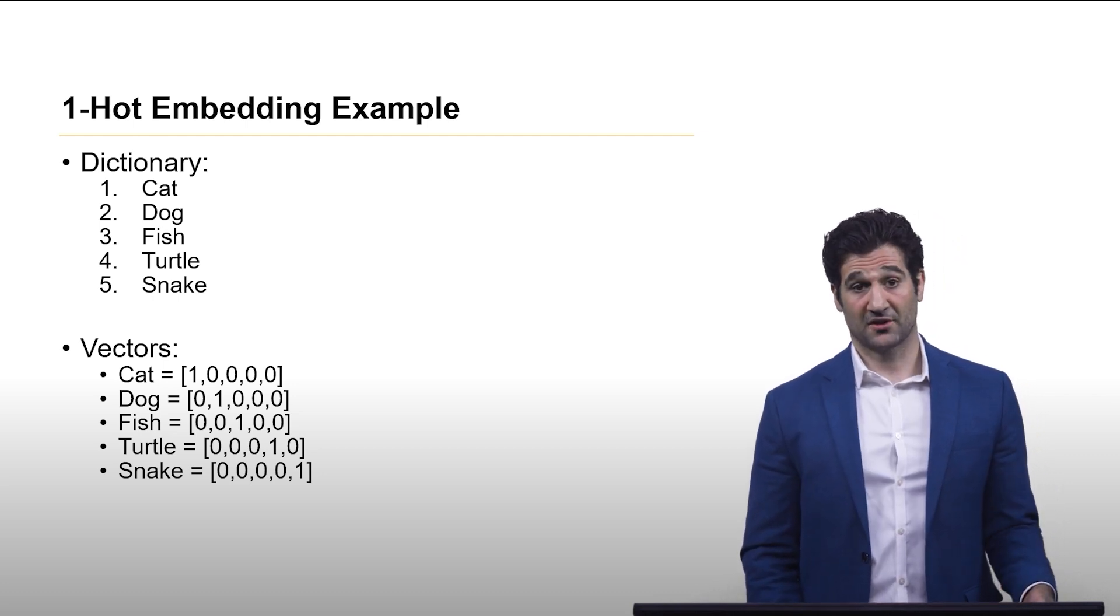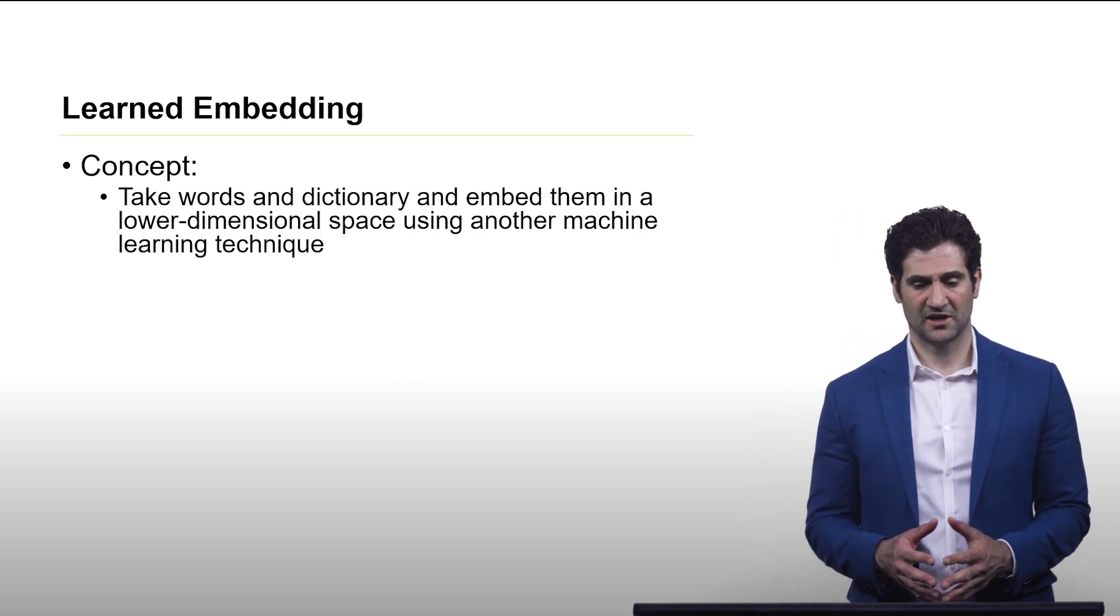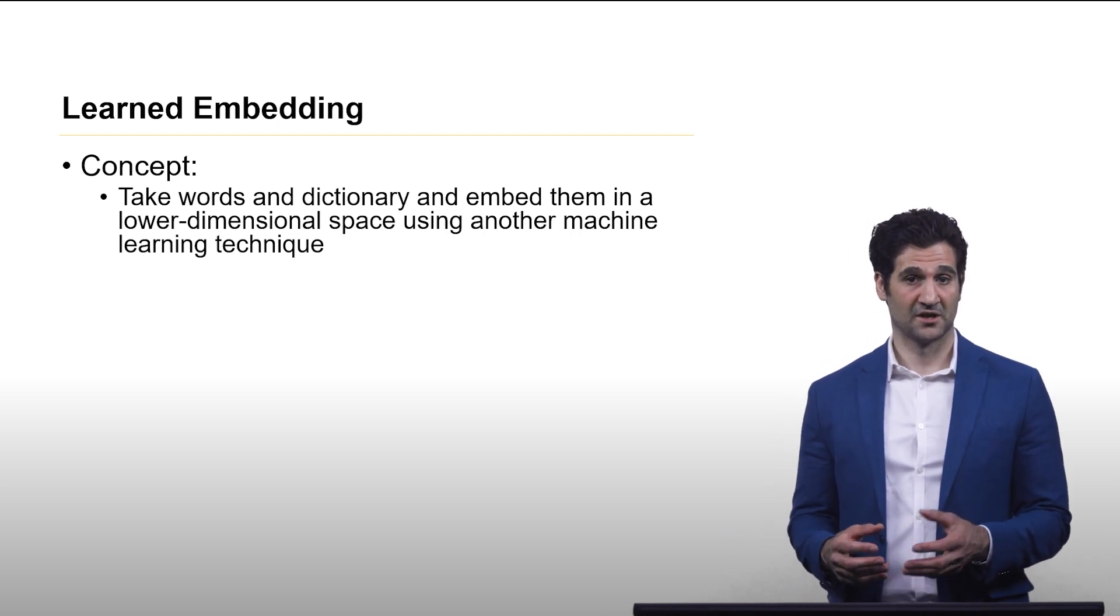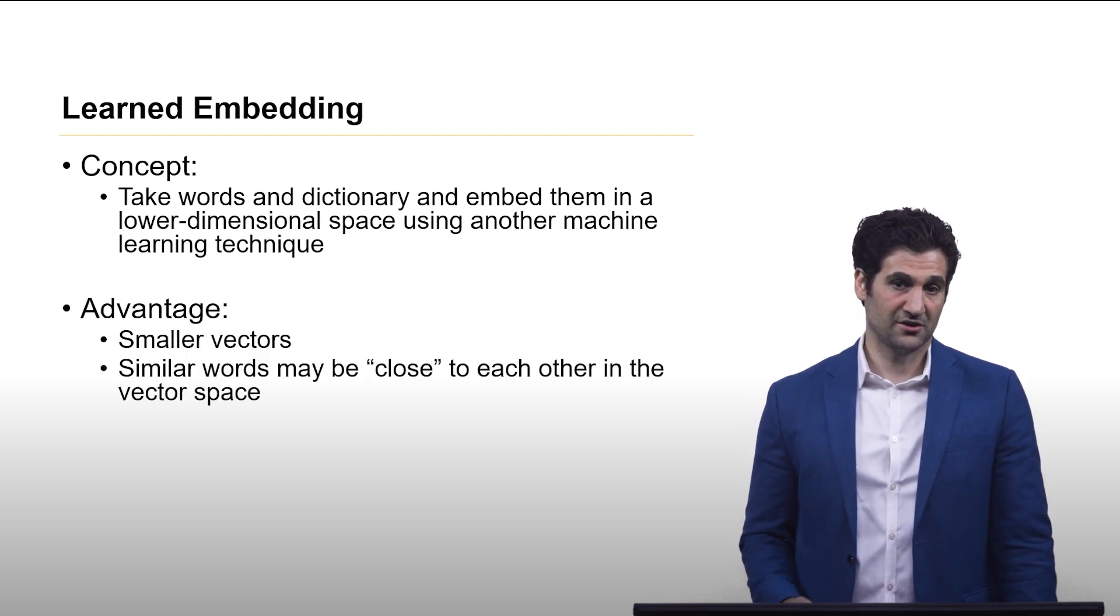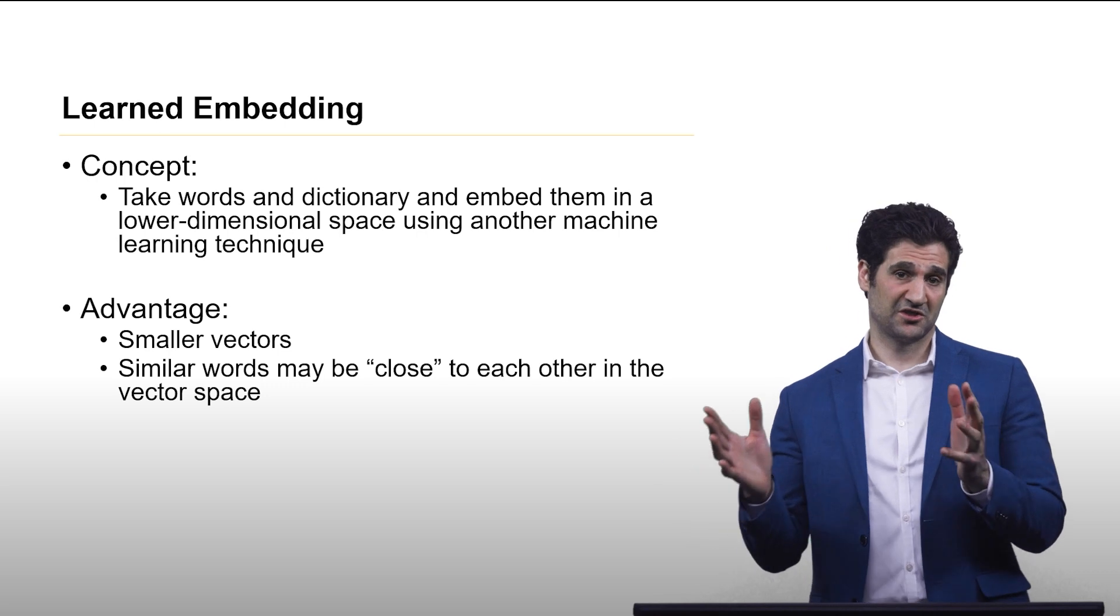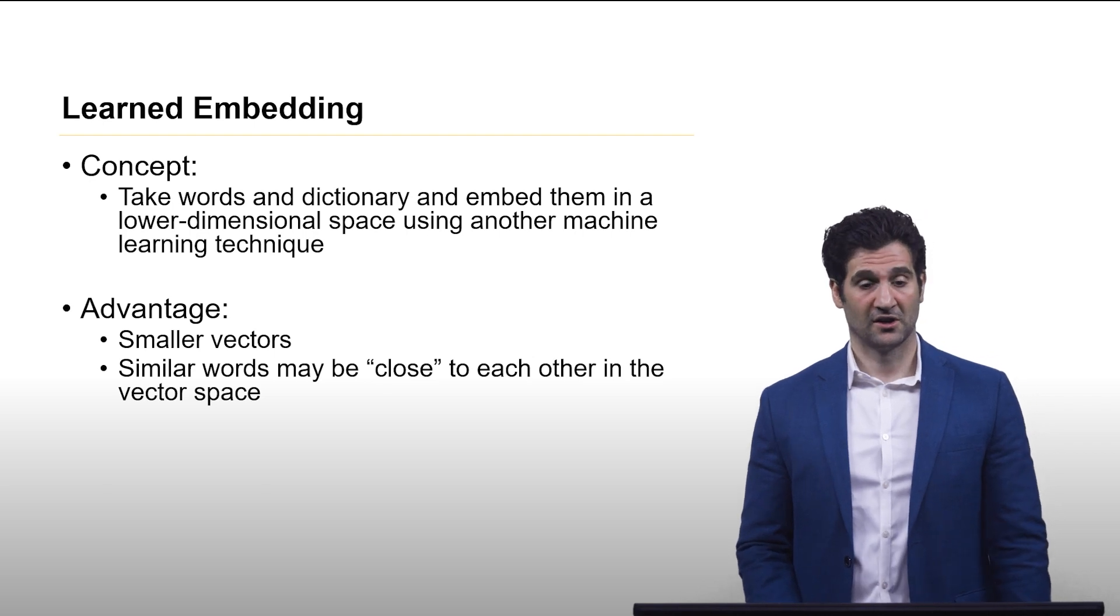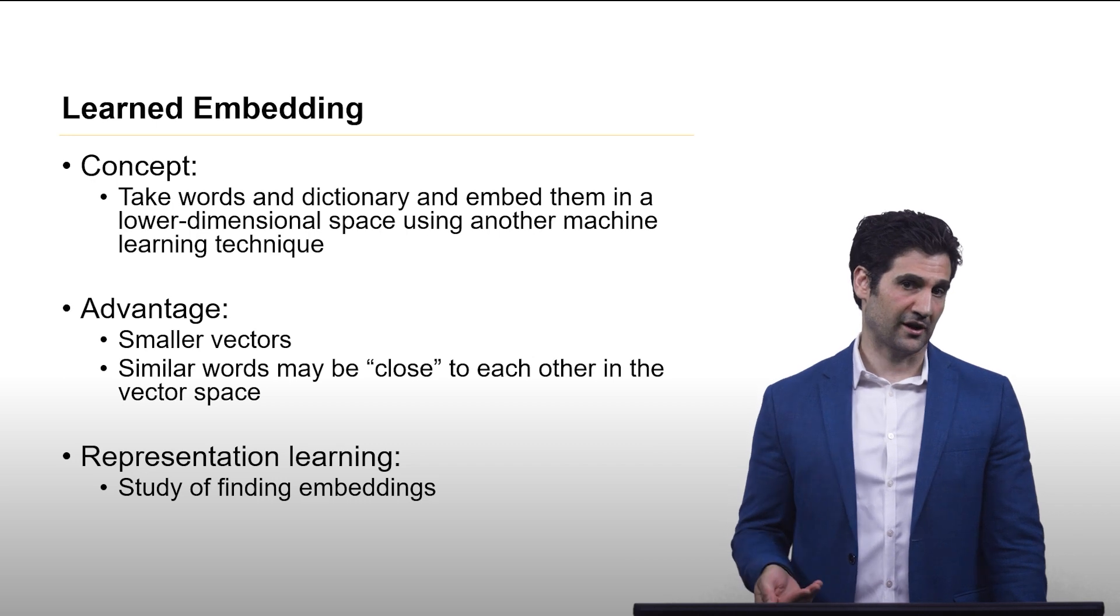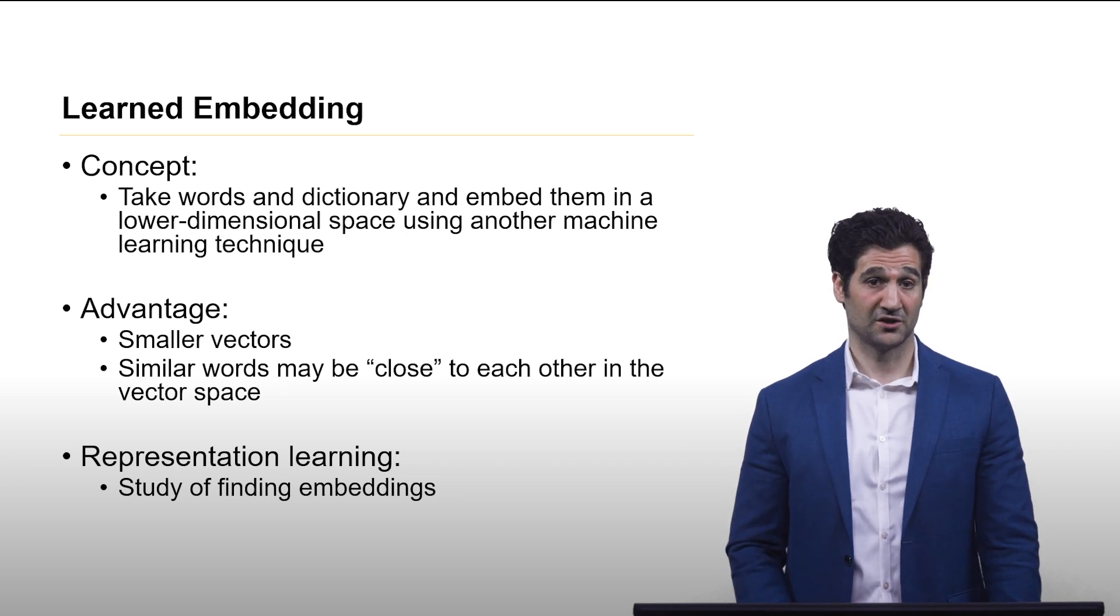Now, this is a very simple way of doing business. We could also look at learned embeddings, which is more sophisticated. The concept is take words in the dictionary and embed them in some kind of lower dimensional space, maybe with another machine learning technique. The advantage here is you can actually have smaller vectors, and you could have similar words be closer together within that vector space, which is a nice byproduct. There's a whole area within machine learning called representation learning, and that is the study of finding clever ways to do this embedding.